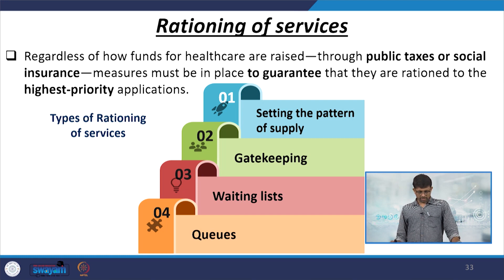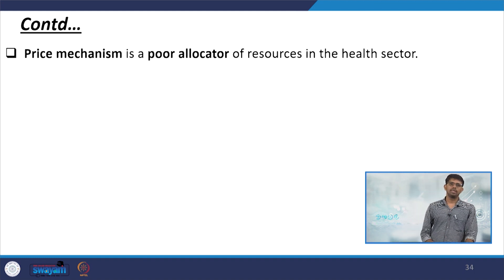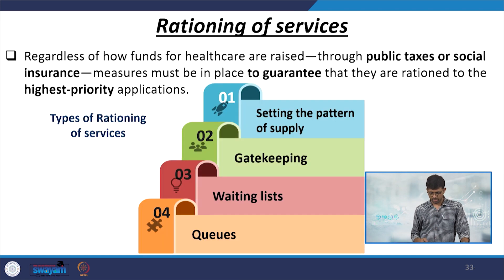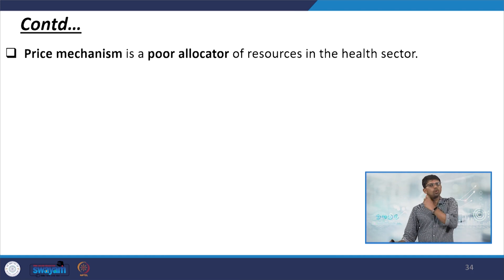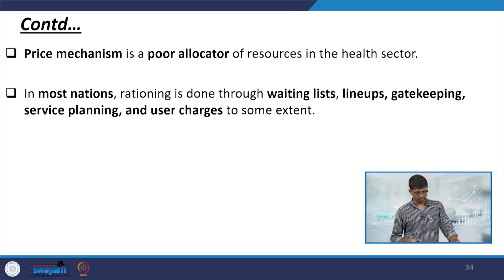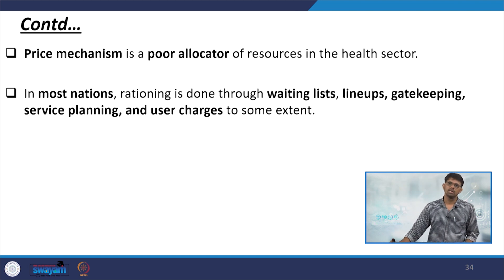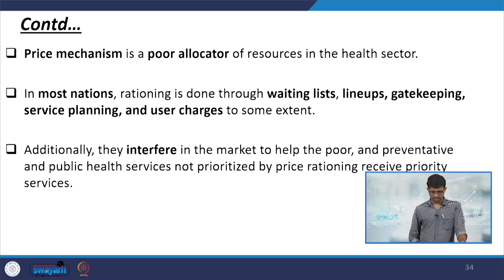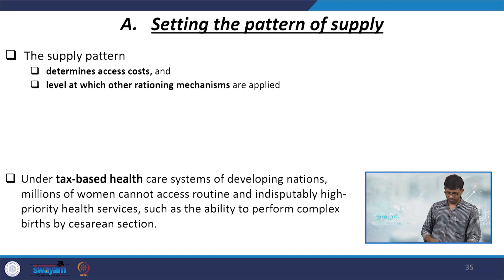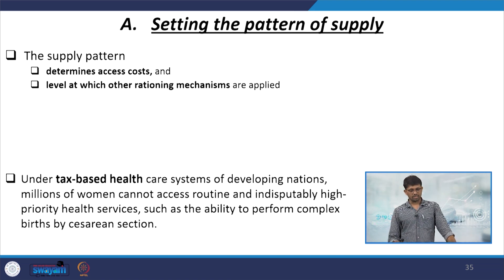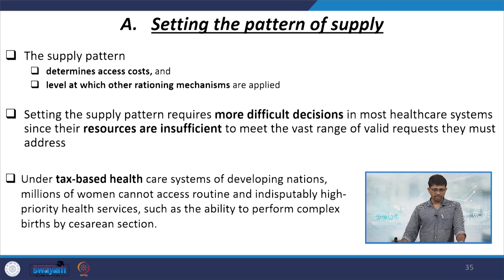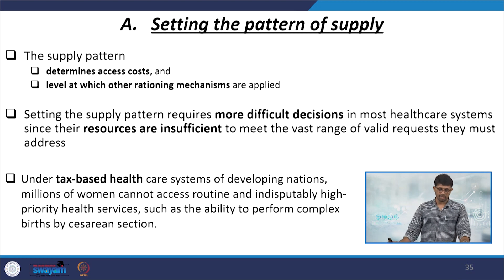Indicators of rationing include setting the pattern of supply, gate keeping, waiting lists, and queues. Price mechanism is considered a poor allocator of resources in the health sector. Non-price rationing is done through waiting lists, gate keeping, service planning, user charges, etc. Additionally, market interventions to help the poor raise equity issues. Setting the supply pattern determines access cost, and the level at which other rationing mechanisms are applied is very important to discuss.